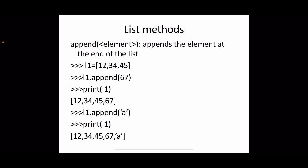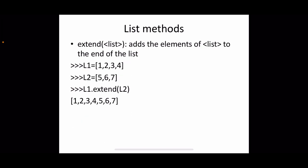For the append method: with l1 = [12, 34, 45], calling l1.append(67) inserts 67 at the end of the list, giving [12, 34, 45, 67]. Similarly, appending the character 'a' adds it to the end of the list, and the new list contains that element as well.